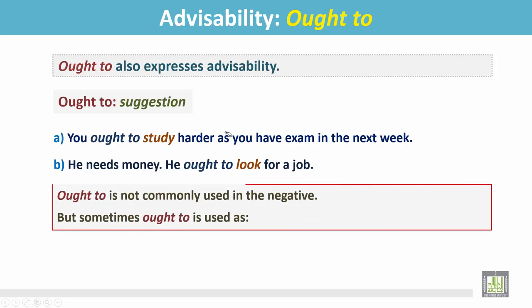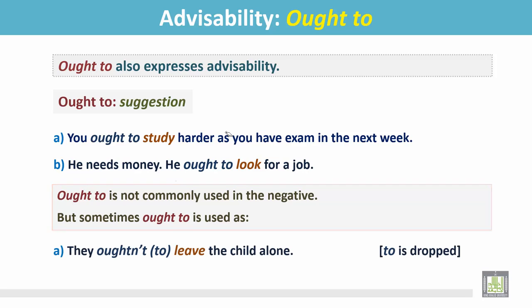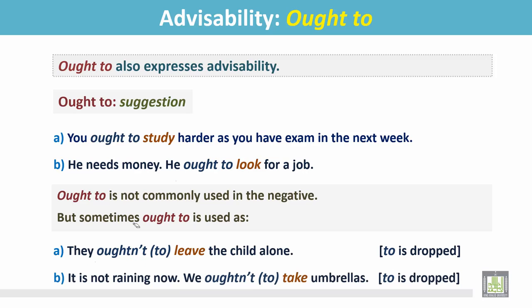Ought to is not commonly used in the negative. But sometimes it is used in a contracted form. For example: 'They oughtn't leave the child alone' — here, 'to' is dropped and it is used in the negative form. Another example: 'It is not raining now, we oughtn't take umbrellas' — again, 'to' is dropped and it is used in the negative form.